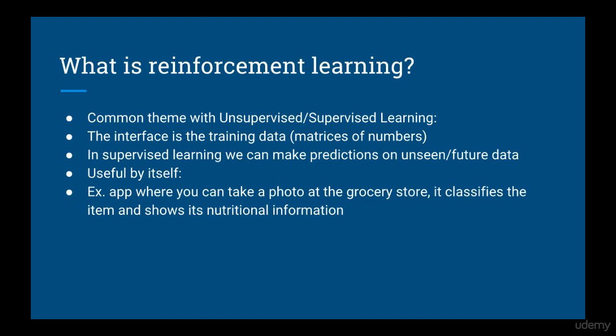The common theme with both of these is that the interface is just training data. You take in some random training data, either x and y or just x, and you call the fit function. In the case of supervised learning, you can then make predictions on future data. This by itself can be useful — imagine you've written an app where you can scan a photo you take at the supermarket, classify what you took a photo of, and return nutritional information about it.